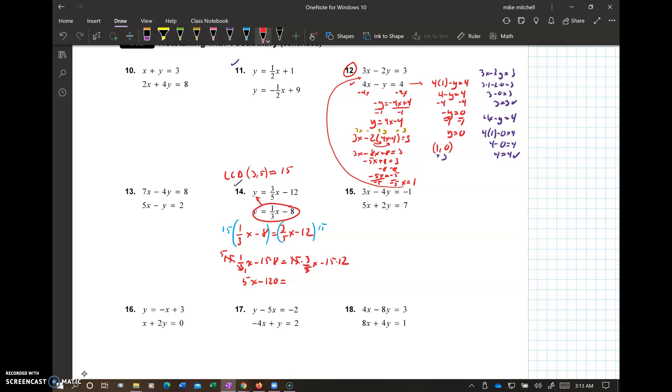So if I were to write this out, it would be 15 times 1/3 x. I've got to write bigger. 15 times 1/3 x minus 15 times 8 equals 15 times 3/5 x minus 15 times 12. Reduce, reduce. That goes to 5 and 1. So we have 5x minus 120. The 15 and the 5 cancel to 1 and 3. That's 9x. 15 times 12. I can't think of that really quick. 180.